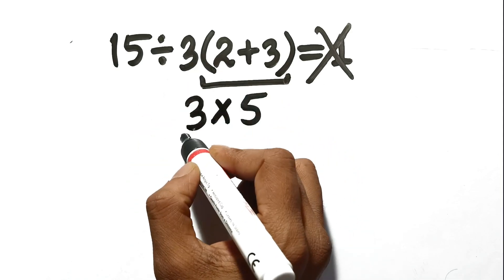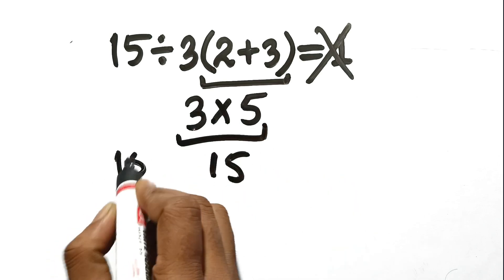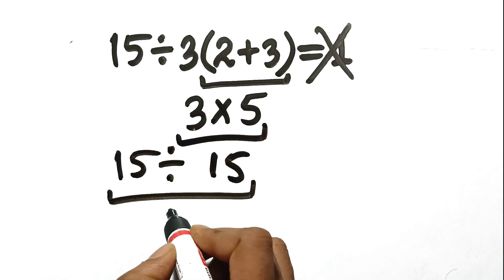So you think, okay, 3 times 5 is 15. Then you take the original 15, divide it by your new 15, and you get 1.